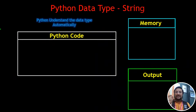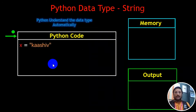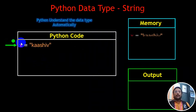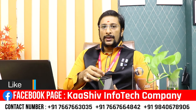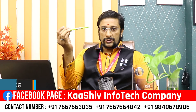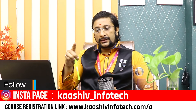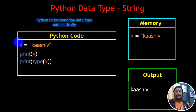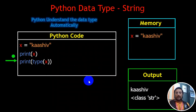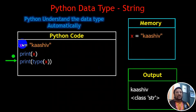You can understand the data type automatically — there is an option. That's why we are going to call this string. So we are going to call this string. If we were to call this variable, we will call it the same variable. We will call it the string. That's the X. We will store it.